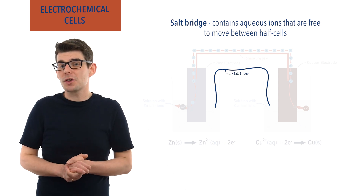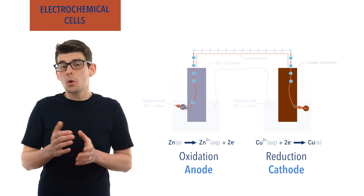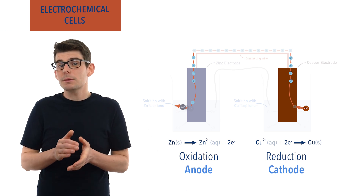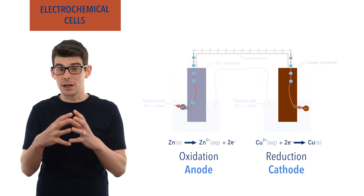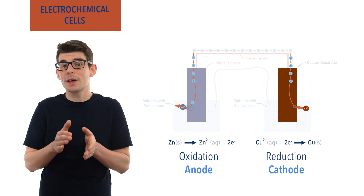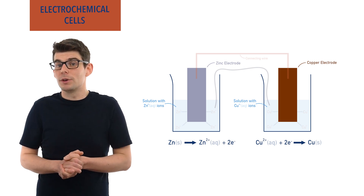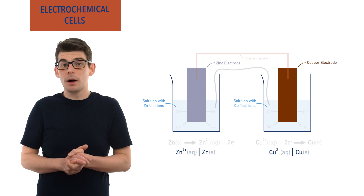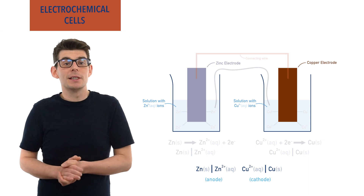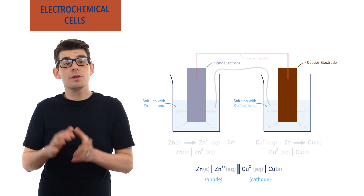The half cell where reduction takes place is called the cathode, and the half cell where oxidation takes place is called the anode. Although oxidation and reduction are happening at the same time in an electrochemical cell, the reactants being oxidized and reduced never actually come into direct contact. This means we tend to describe the processes occurring using half equations for each half cell and use simple notation to show the overall electrochemical cell. We write the species that react in each half cell, each separated by a single bar. The anode is placed on the left and the cathode on the right, with a double bar used to represent the salt bridge. The products of oxidation are in the middle next to the salt bridge, and the products of reduction furthest away.